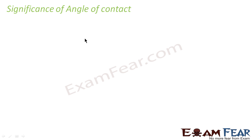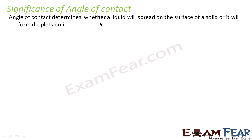Now what is the significance of angle of contact? Angle of contact determines whether a liquid will spread on the surface of a solid or it will form droplets. When you pour water on a lotus leaf, it takes the form of a droplet. But when you pour water on a piece of cloth, it will not form droplets — it will spread over the cloth and the cloth will get wet. The factor that determines this is the angle of contact.